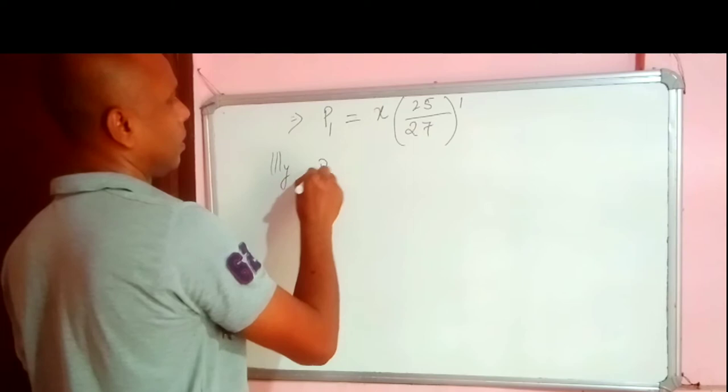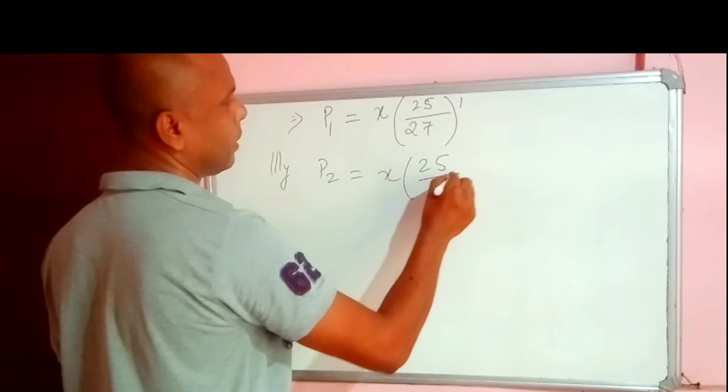Similarly, P2 equal to X 25 by 27 power to the power 2.